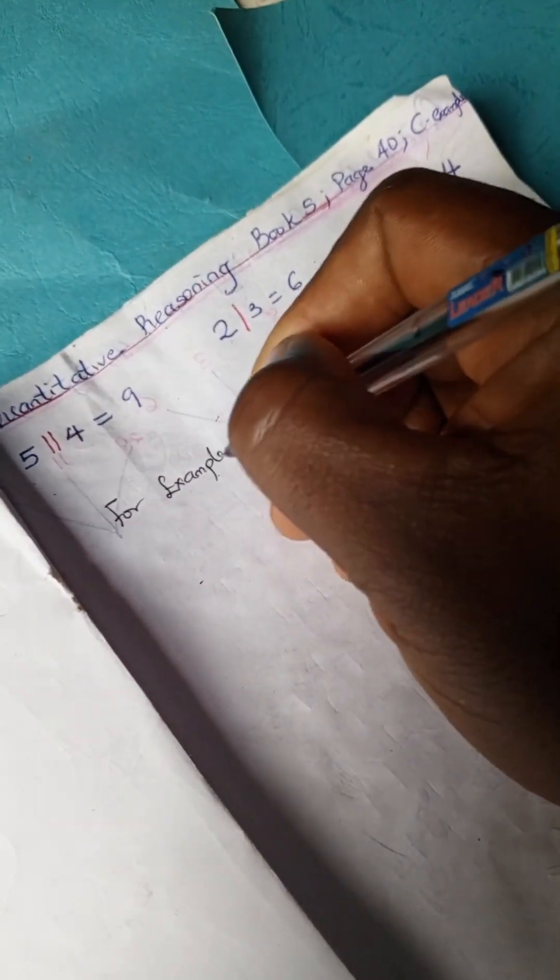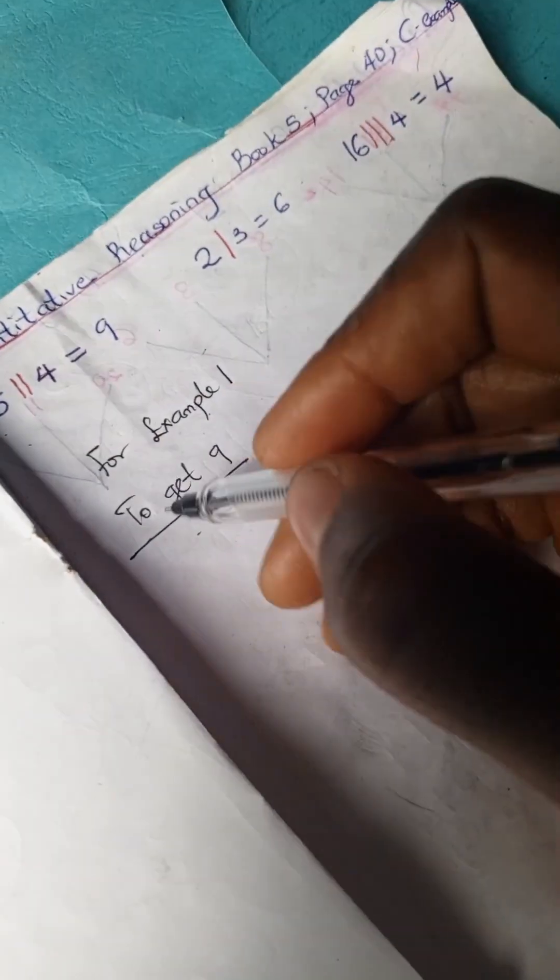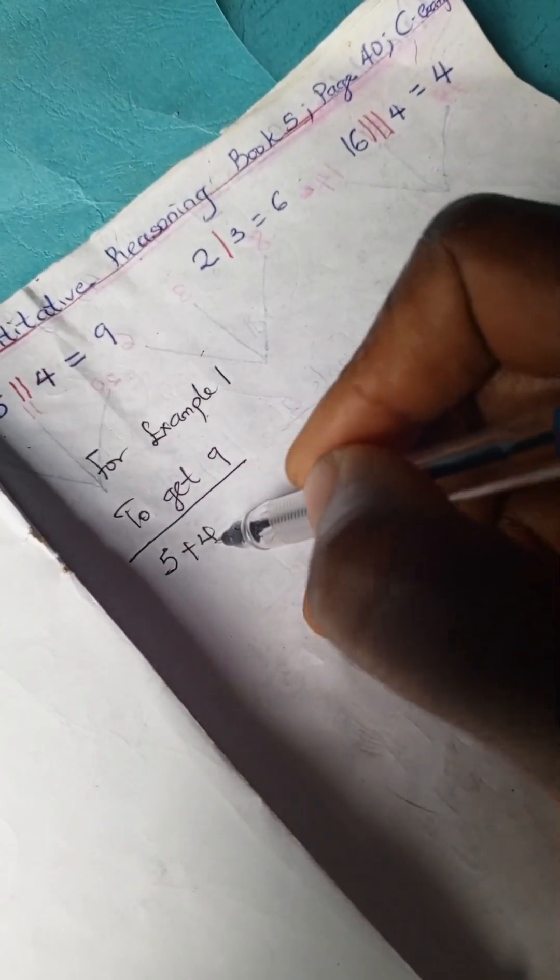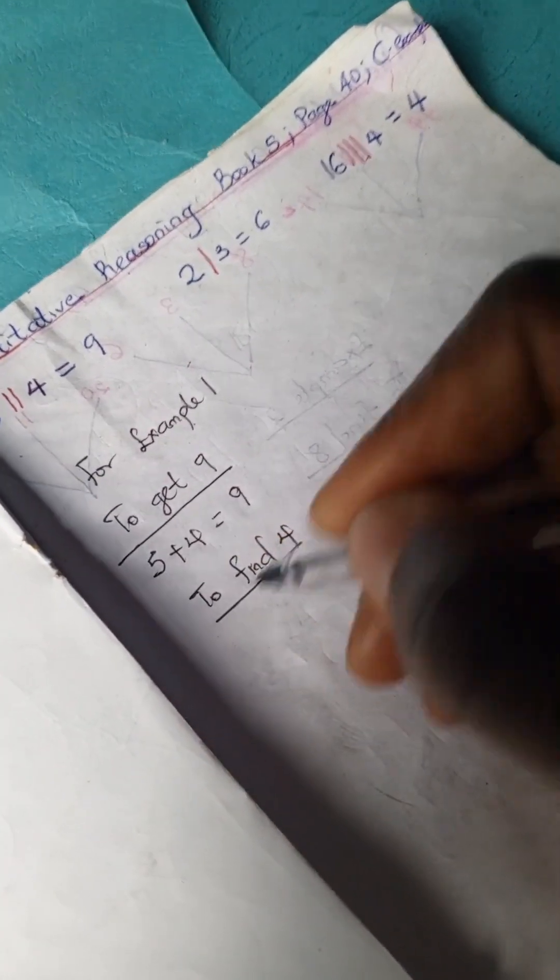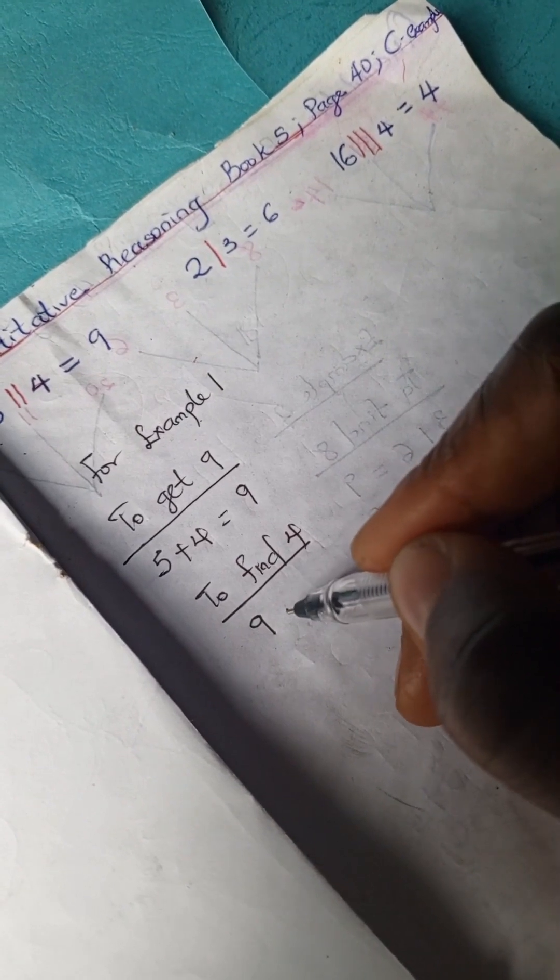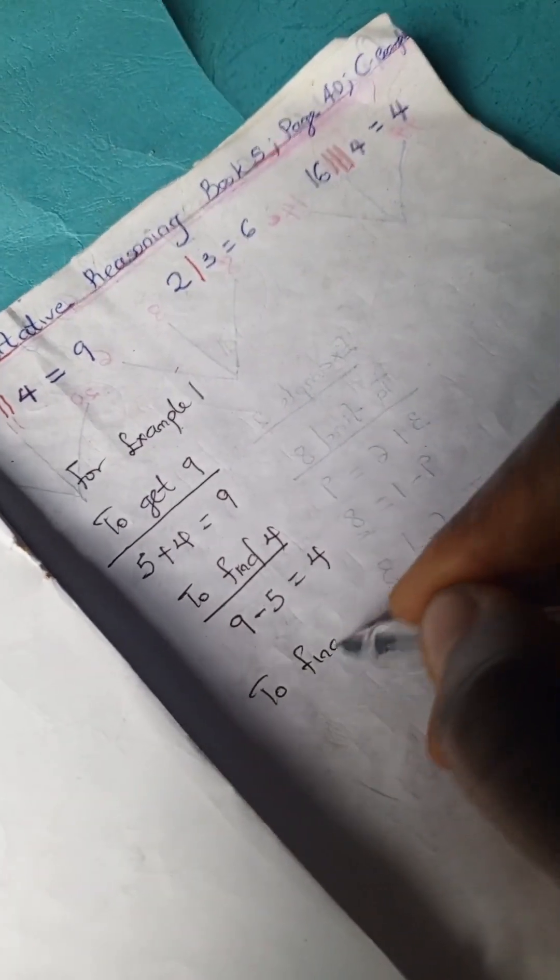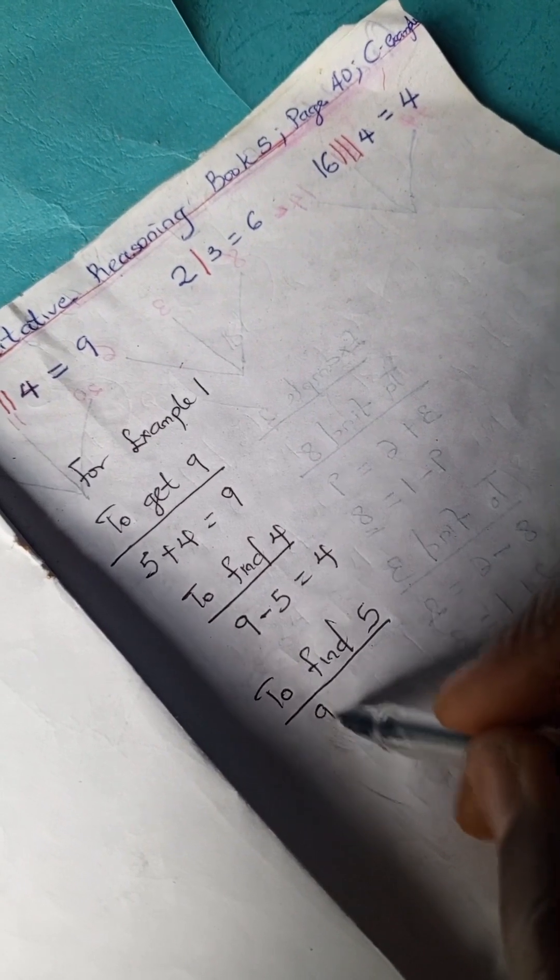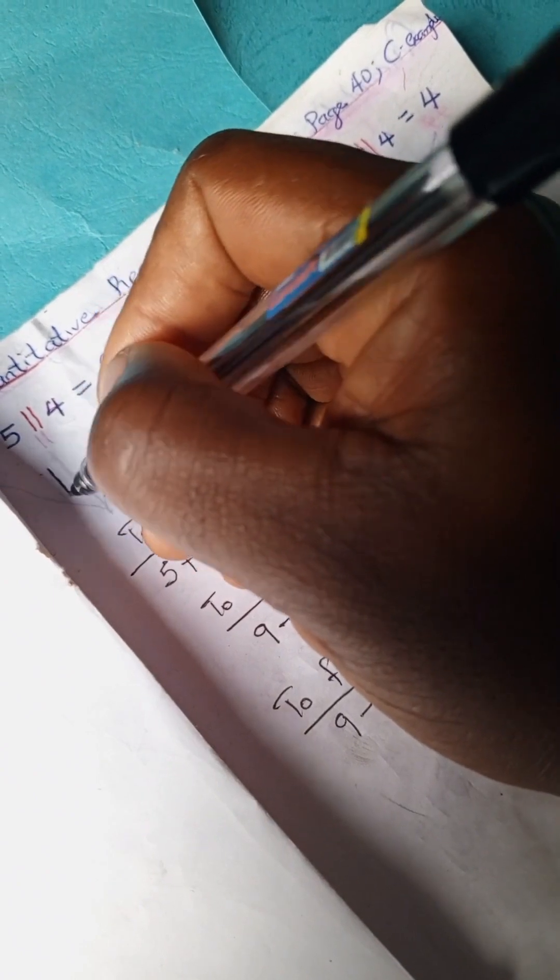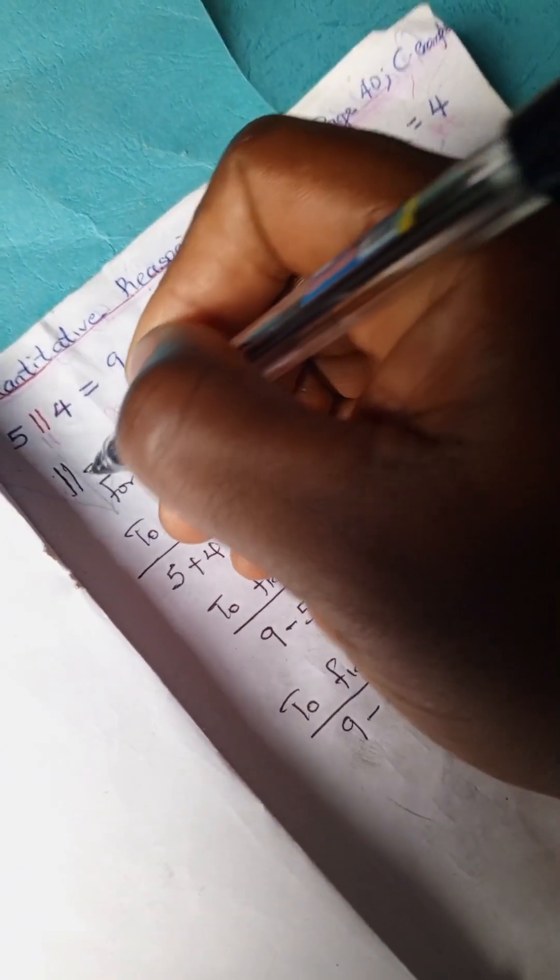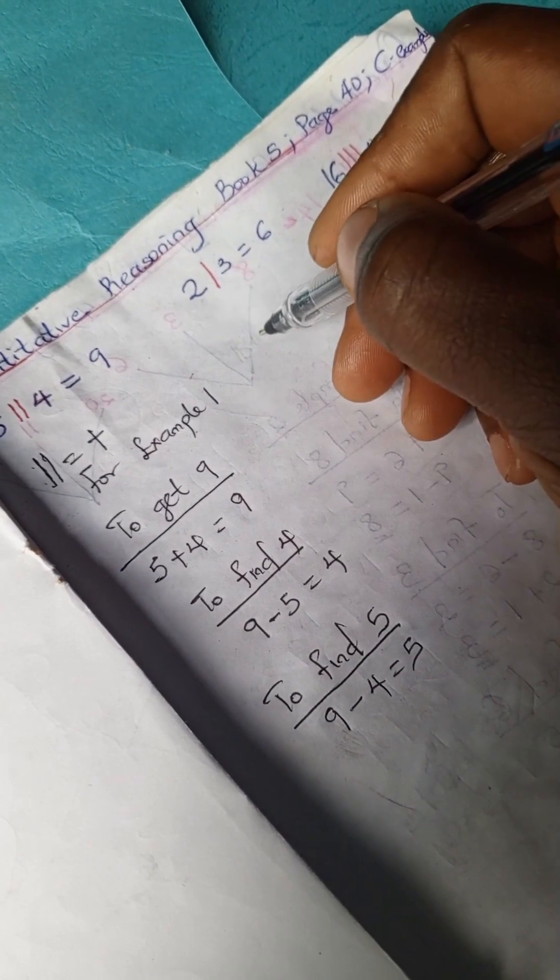To get 9, we have 5 plus 4 equals 9. To find 4, we have 9 minus 5 equals 4. And to find 5, we have 9 minus 4 equals 5. So we can see every double stroke implies plus.